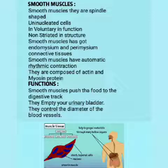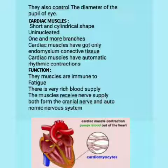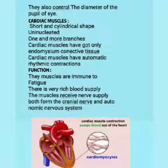Smooth muscles push food through the digestive tract and empty the urinary bladder. They control the diameter of the blood vessels. They also control the diameter of the pupils of the eye. They have poor blood supply and they cannot bear fatigue.